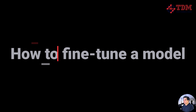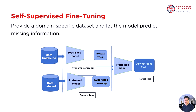How to fine-tune a model? Self-supervised fine-tuning: provide a domain-specific dataset and let the model predict missing information. This is similar to its initial training but with specialized data. For instance, if fine-tuning with healthcare data, the model learns from documents like drug studies and clinical trials.